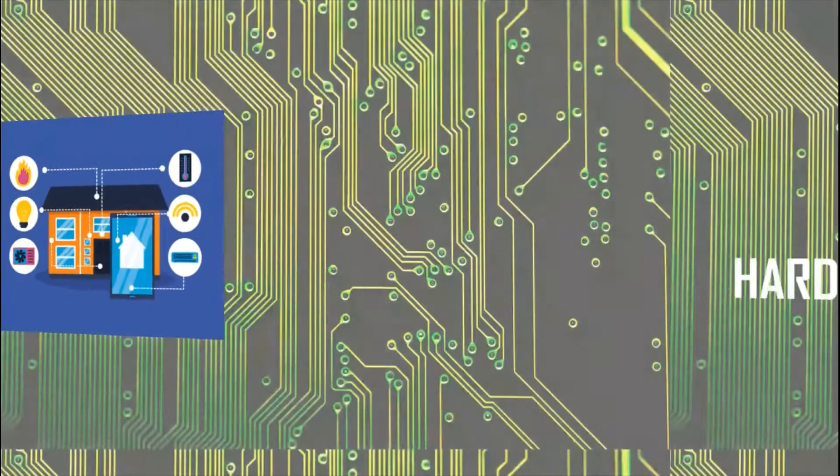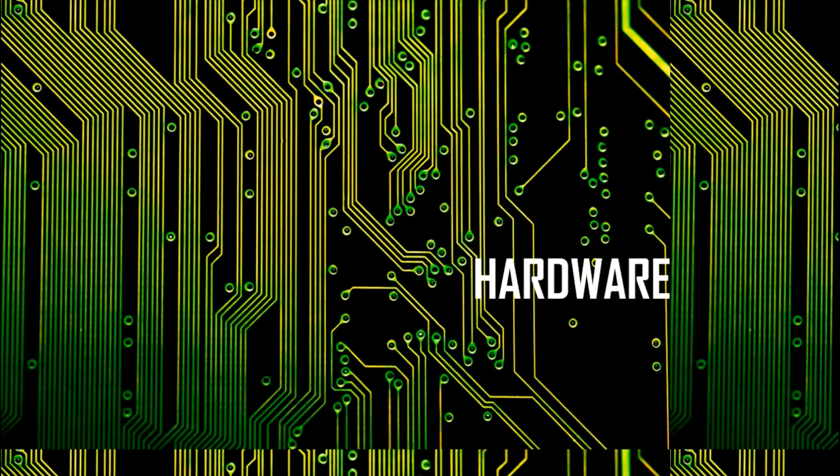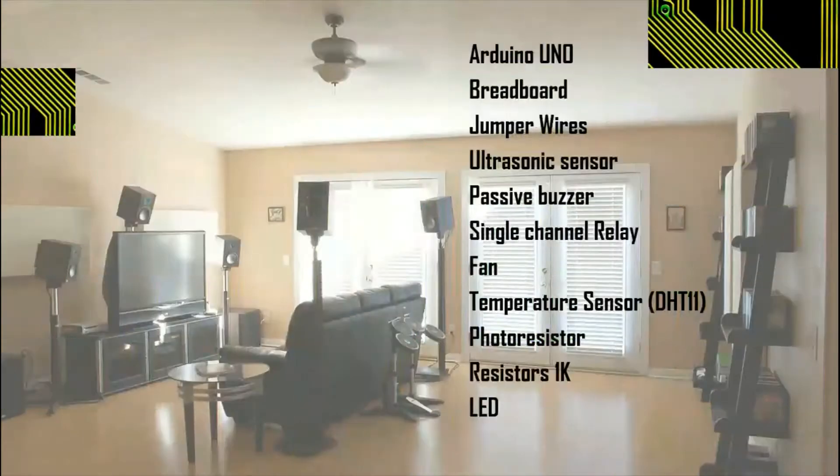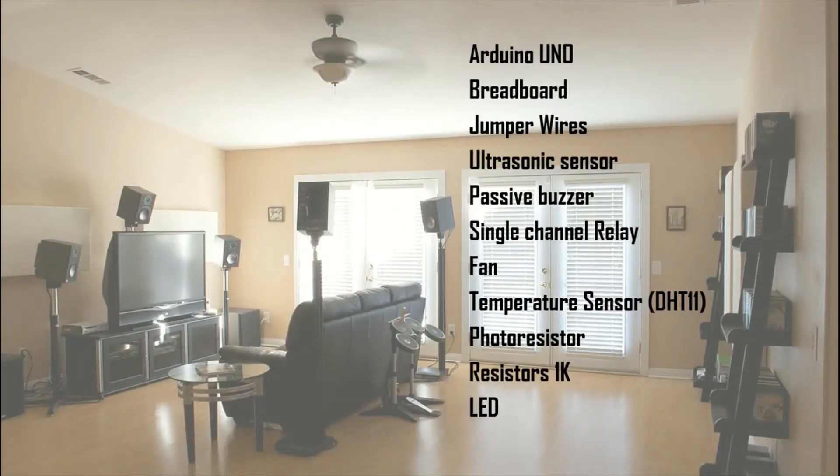Let's have a look at the hardware components quickly. The hardware components used in this project are the Arduino Uno, a breadboard, some jumper wires, an ultrasonic sensor, a passive buzzer, a single channel relay, a fan, a DHT-11 temperature sensor, a photoresistor, some 1K resistors, and an LED of any color you wish.